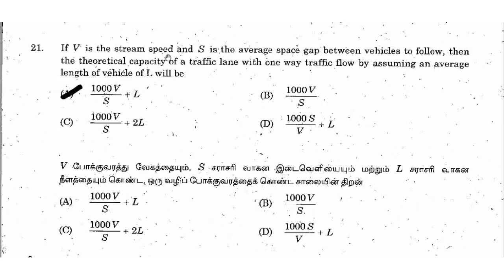V is the stream speed and S is the average space gap between vehicles. This is one of the traffic levels covered under traffic engineering in the TNPCAE 2015 exam.